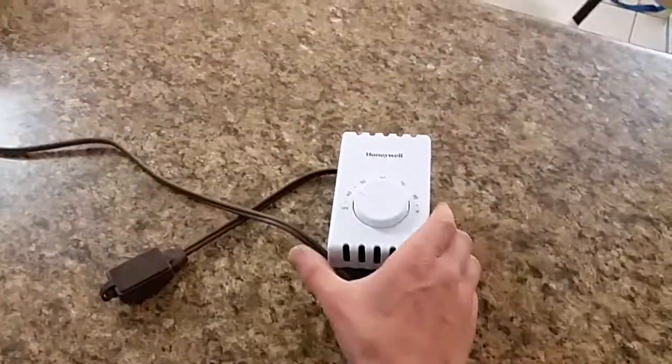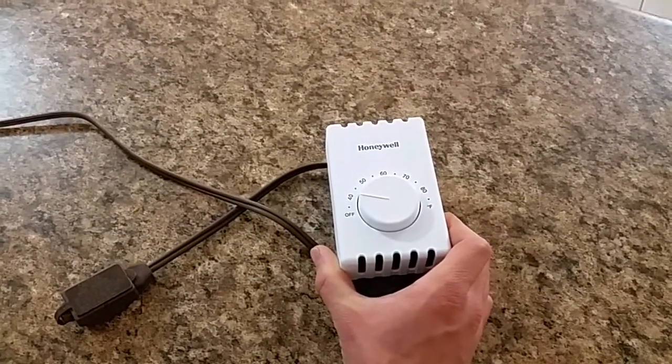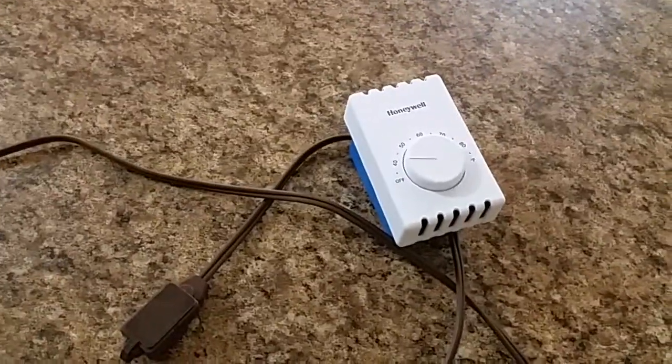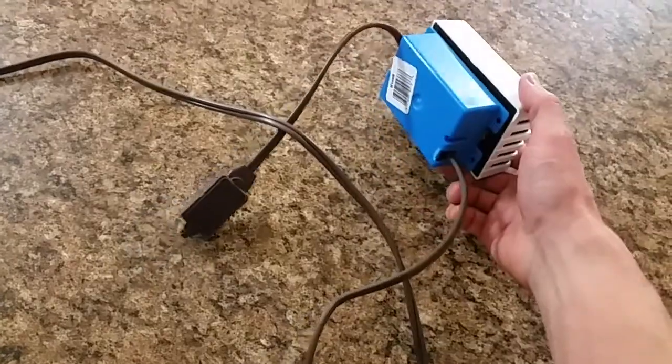So what I ended up doing was taking a line voltage thermostat, just a baseboard heater thermostat. You can get them for about 25 bucks at the store, maybe 10 or 15 bucks online. Spliced it onto an extension cord, just el cheapo from the Walmart.